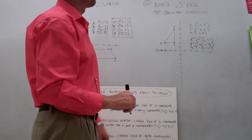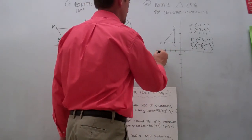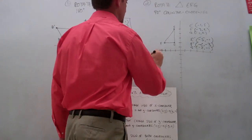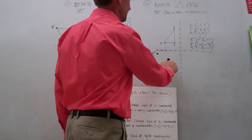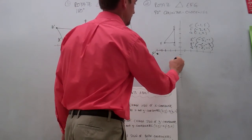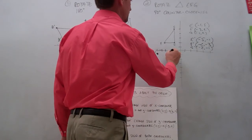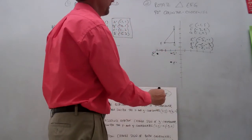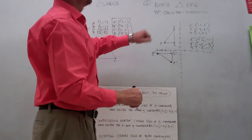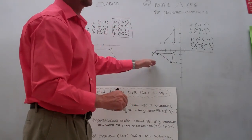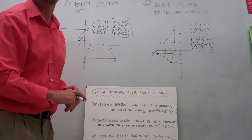Let's plot these three points. When x is negative 5 and y is negative 1, there's where we find E prime. When x is negative 2 and y is negative 3, there's where we put point F prime. And when x is negative 2 and y is negative 1, there we find point G prime. Connect the vertices, and you have a rotation of triangle EFG 90 degrees counterclockwise. If you follow the rules, you'll never go wrong when rotating polygons around the coordinate plane.